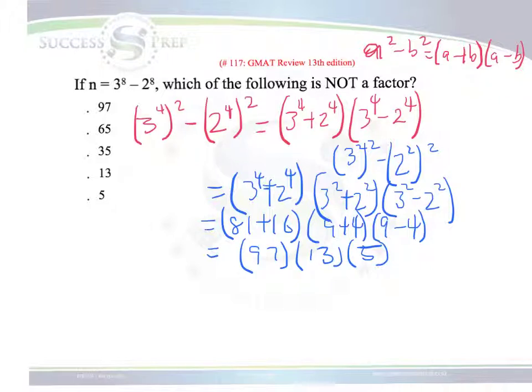All right. So at this point, we look at everything and we say, for one of these guys to not be a factor, it means it cannot go in these values, which is the value of n. So at this point, this is our new n value. Essentially, what you want to do is take each one of these and try to see if we can divide it through into this.